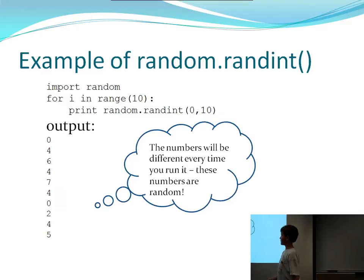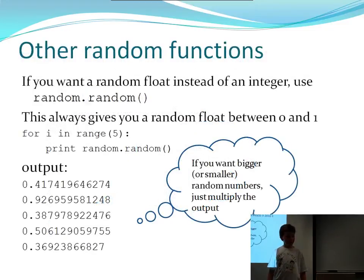The numbers will be different every time we run it because the numbers are random, so they won't be the same every time, otherwise they will be predictable. Another random function is random.random, and this always gives you a float or a floating point number between 0 and 1. So you can loop five times and print a random number between 0 and 1, and it gives you a bunch of long floating point numbers. If you want something bigger or smaller, you just multiply or divide the output.